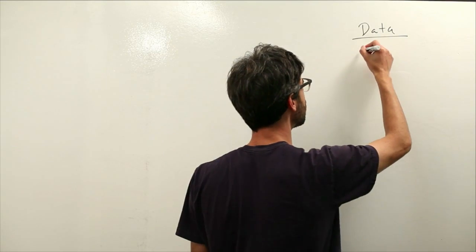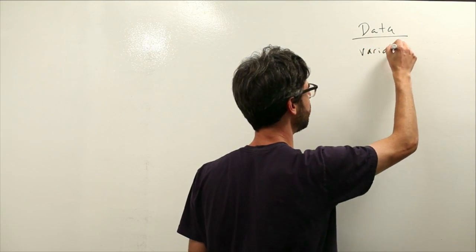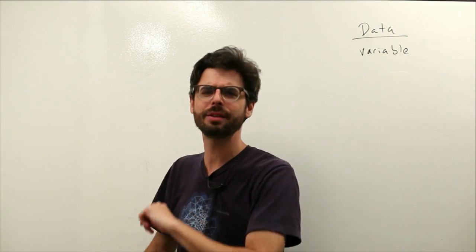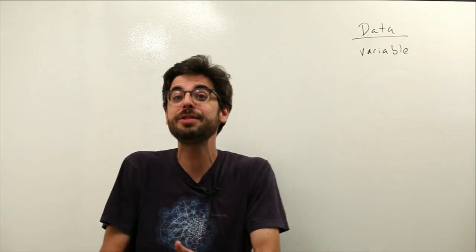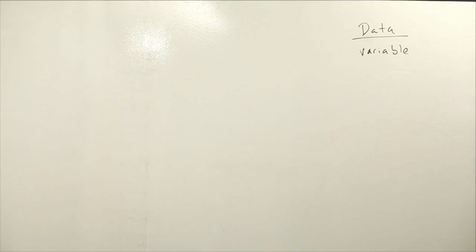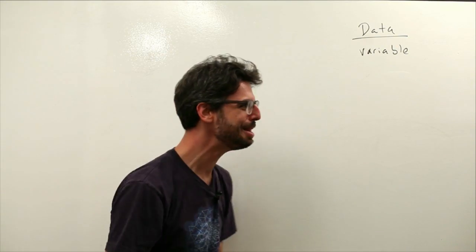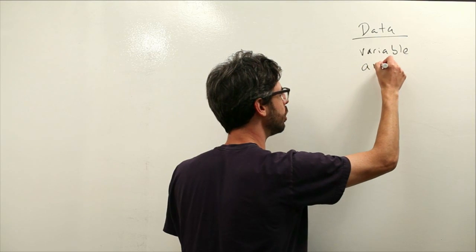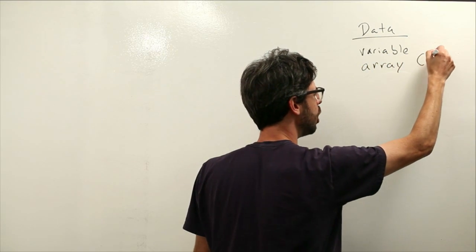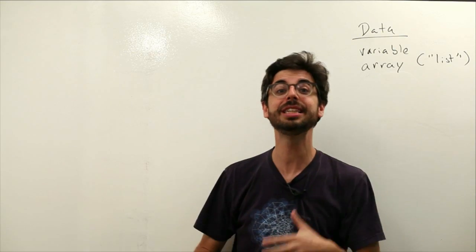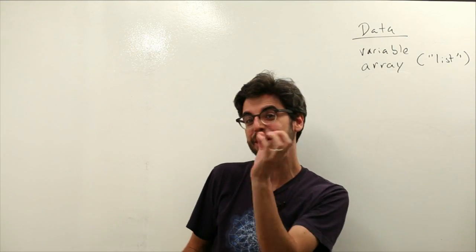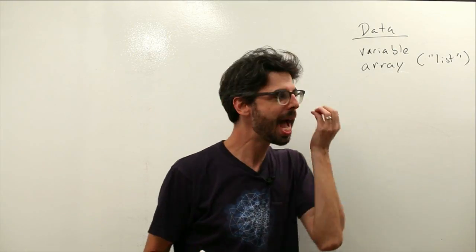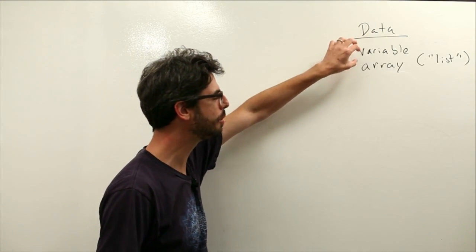And this is actually one of the first things we will learn about, which is this concept of a variable. This thing that stores data. In addition to the variable, which is an individual piece of data, we're also going to learn about something called an array, which we could also think of as a list. So what about a list of data? Instead of a spaceship has an individual location, what if there are ten enemies on the screen? Could we have a list of enemy locations? So any computer program needs to store data. We're going to learn about variables and arrays.